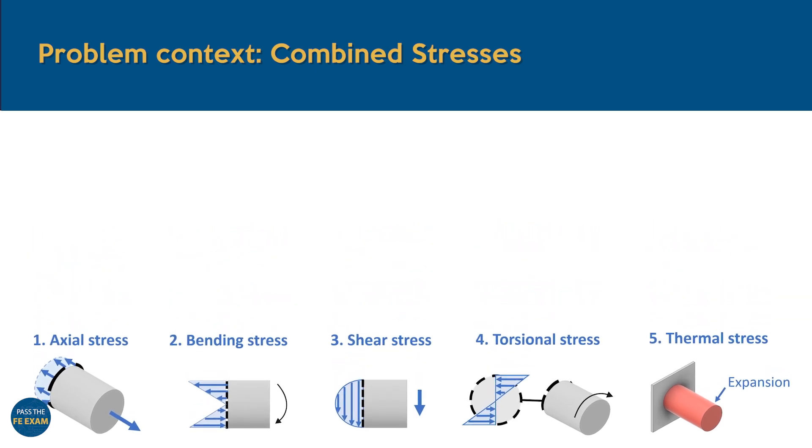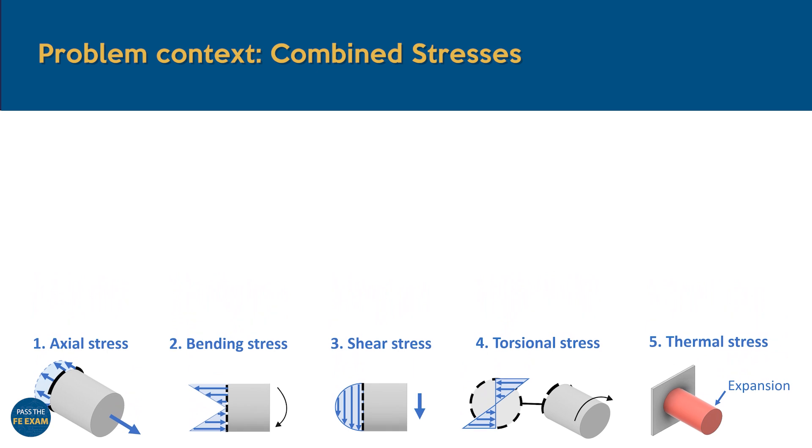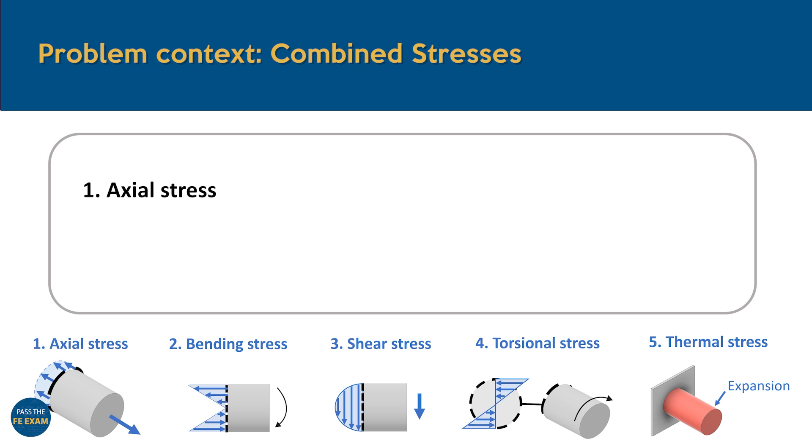We'll start off with a quick explanation of each stress case, starting with axial stress. This stress occurs when a force is applied along the axis of an object, placing it in either tension or compression. If a beam is stretched along its length, it creates positive or tensile stress, while compression results in negative stress. This applied force creates a uniform normal stress distribution across the entire cross-sectional area of the beam, because every part of the cross-section experiences the same amount of force per unit area. The FE handbook supplies us with a formula to calculate this normally distributed stress, which is simply defined as the applied axial force divided by the object's cross-sectional area.